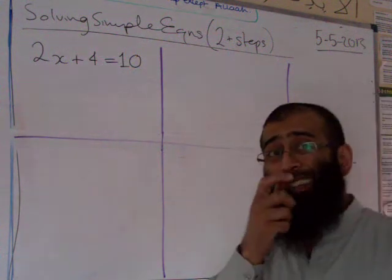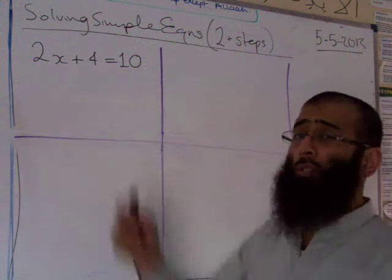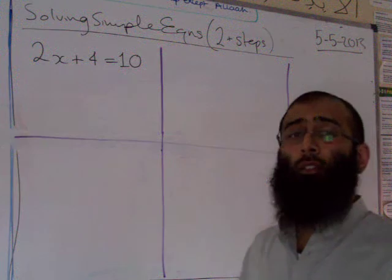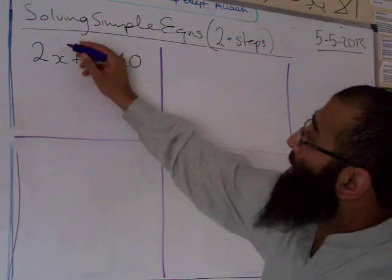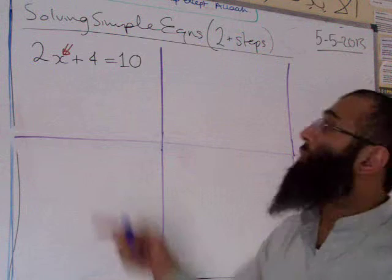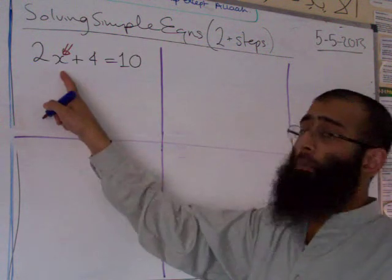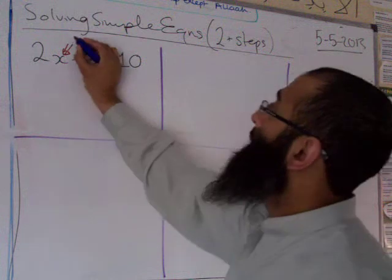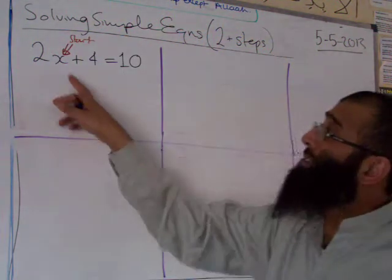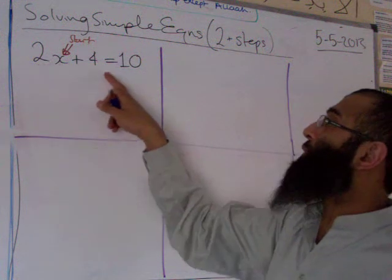The key to solving these questions correctly every single time is the word 'read'. We have to start reading the equation starting from x. So we start from x — even though x is here and the first number is 2, it says 2x plus 4 equals 10.